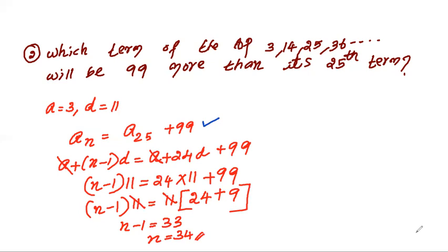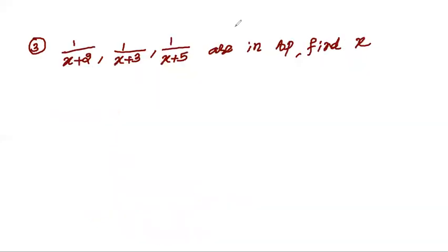Now moving to question number 3: 1 by x plus 2, 1 by x plus 3, 1 by x plus 5 are in AP. Find X.